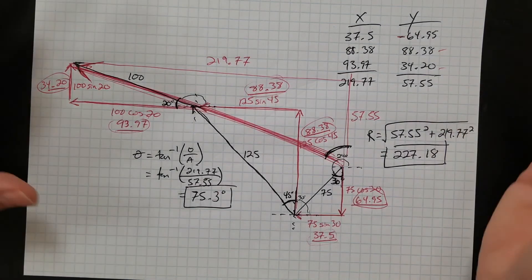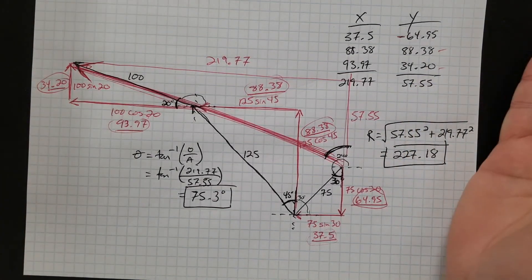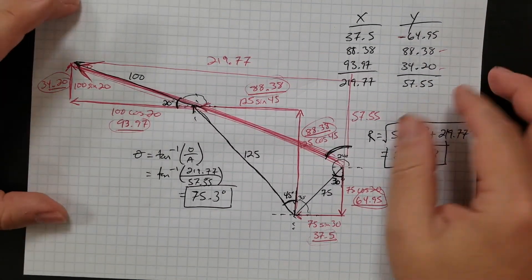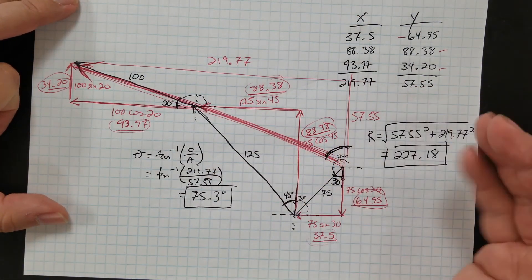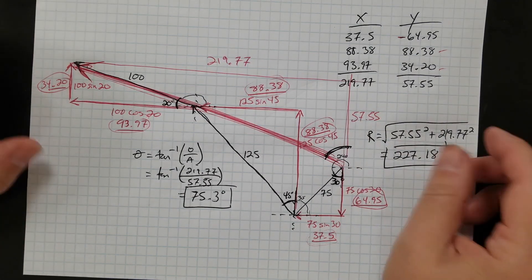So this angle here is 75.3 degrees. So, again, adding vectors, it's tedious, yes, but hard, not really. You break each individual vector down into x and y pieces and then just add up their components. And then when you need to put them back together, you do Pythagorean theorem. So, let's do it.